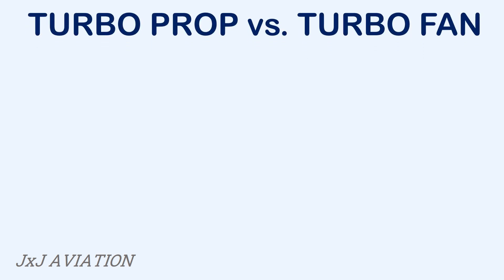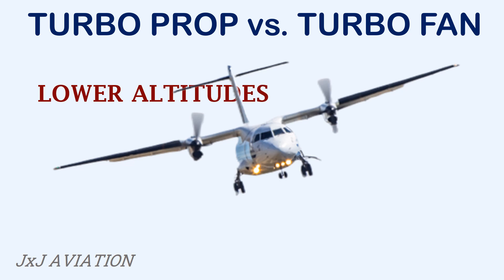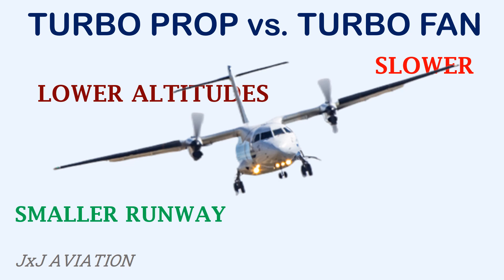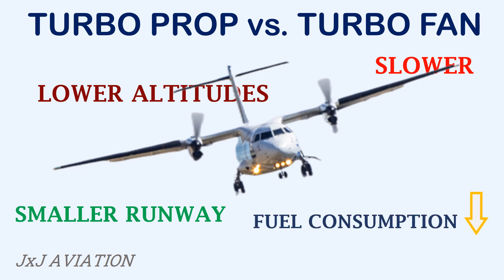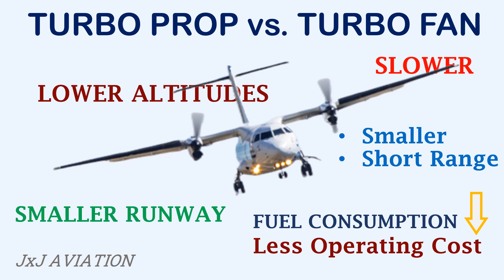Now let's do a simple comparison between aircraft having turboprop engines and aircraft having turbofan engines. On a turboprop, since most of the thrust is created by the propellers, turboprop engines are more efficient when operated at lower altitudes where the density of air is greater. The thrust created by a turboprop is lesser than turbofan engines, so the aircraft speeds are slower. Aircraft with turboprop engines can take off and land on a smaller runway. But the biggest advantage of a turboprop is that the fuel consumption is much less when operated on short routes, meaning less operating cost. So turboprop aircraft can be found on smaller short range routes as they are most efficient for these kinds of operations.